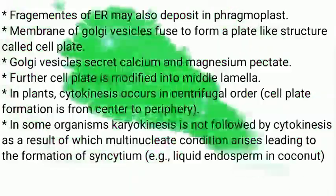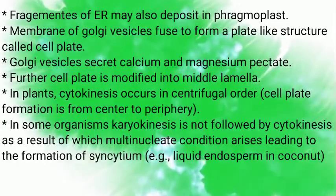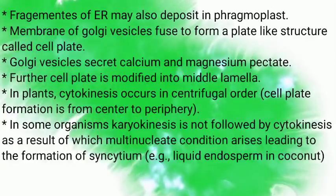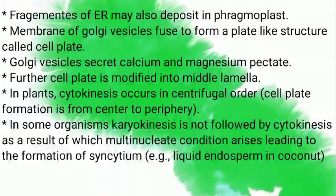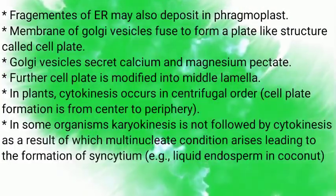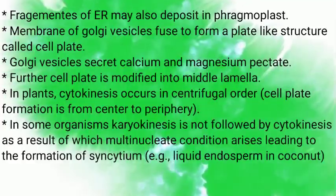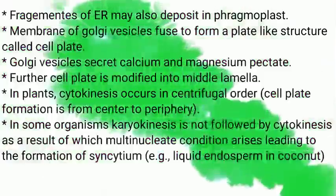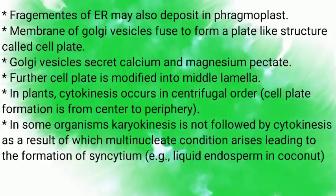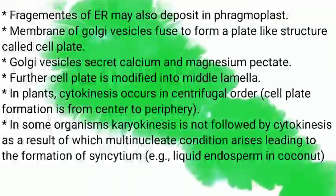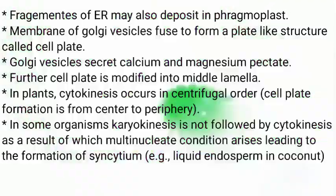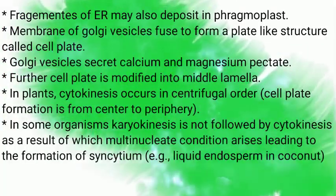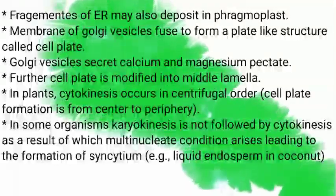Cell plate formation proceeds from center to periphery. In some organisms, karyokinesis is not followed by cytokinesis, as a result of which a multi-nucleate condition arises, leading to the formation of syncytium. An example is liquid endosperm of coconut. In the cell plate method, Golgi vesicles secrete calcium pectate and magnesium pectate, and the cell plate is further modified into the middle lamella. Cytokinesis in plants occurs in a centrifugal manner.